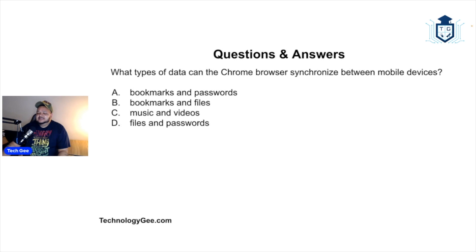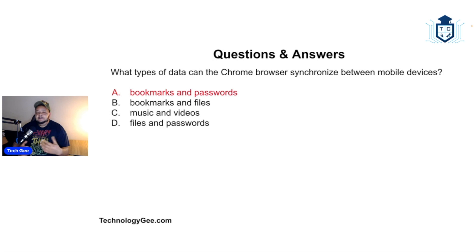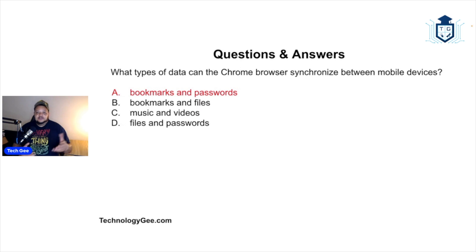What types of data can the Chrome browser synchronize between mobile devices? The options are: bookmarks and passwords, bookmarks and files, music and videos, or files and passwords. Chrome is just a browser — a window to let you explore the internet. It will save your bookmarks and passwords associated with web pages and sites you've logged into, and synchronize that between devices.